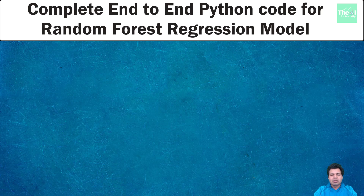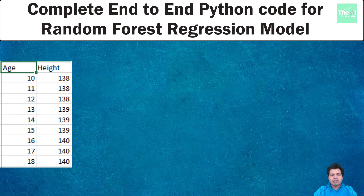The problem statement remains the same as for polynomial regression as well as the decision tree regression case. We have a height and age dataset which contains two columns: age and height. We want to predict the height of a person given his age. Important to note is that we don't want to predict the height of a person whose age is less than 10 years, because the dataset contains age and height data above and equal to 10 years. This data is for illustration purposes only.